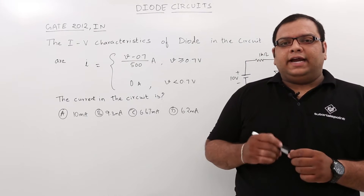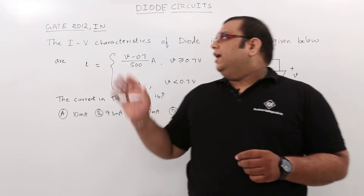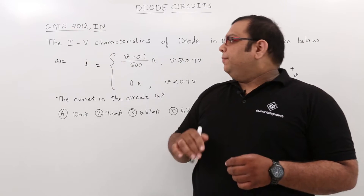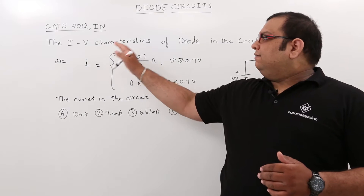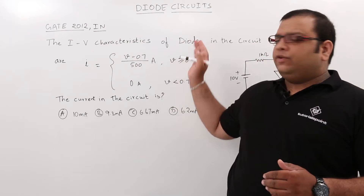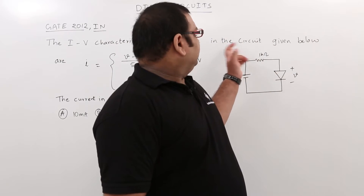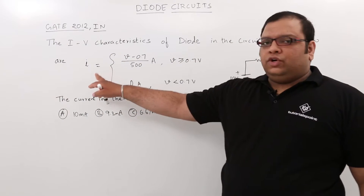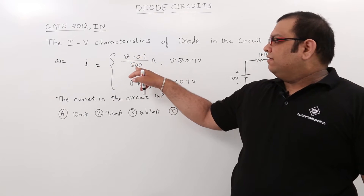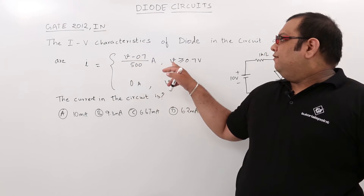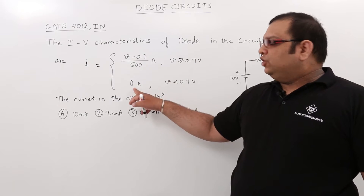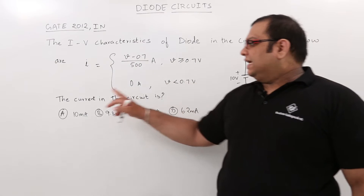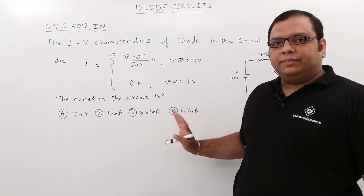In this class let us discuss another GATE previous gate problem on diode circuits. This is the GATE 2012 instrumentation problem. The question statement is: the IV characteristics of the diode in the circuit given below are I = (V - 0.7) / 500 amperes when V is greater than 0.7 volts, and 0 amperes when V is less than 0.7 volts. The current in the circuit is one of the four given options.